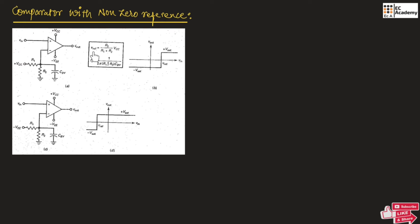In that case, V reference will be a negative voltage. For this negative voltage, as you can observe in the input-output characteristics, if the input voltage is less than this negative reference voltage, the output will be minus V saturation. If the input voltage is greater than this reference voltage, the output will be plus V saturation. This is the operation of comparator with non-zero reference.